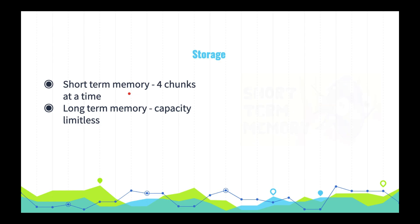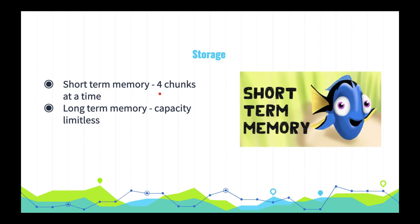We only retain about four information chunks in our short-term memory at a time. So if I gave you a list of four objects like soda, tree, cup, cereal, you'd probably be able to repeat it back, but it becomes increasingly difficult as the list stretches beyond four chunks.